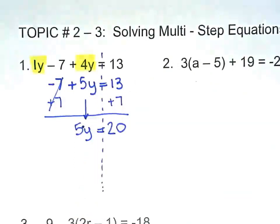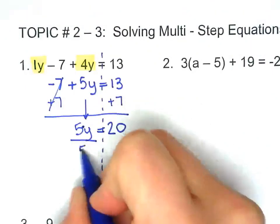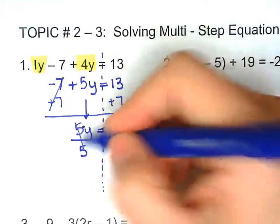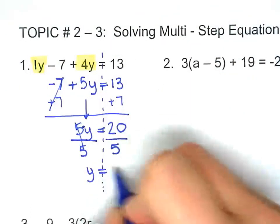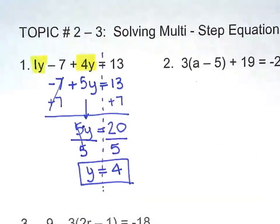Now everybody knows we have an invisible multiplication sign right there. So we do the opposite of multiplication, which is division. So we divide both sides by 5. y equals 4. Not bad.